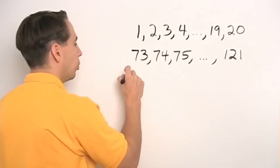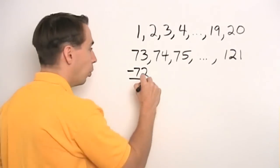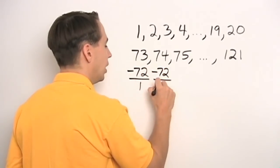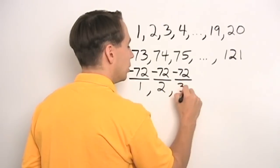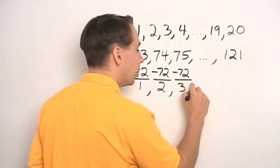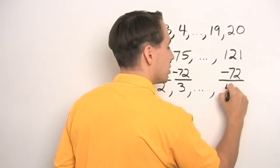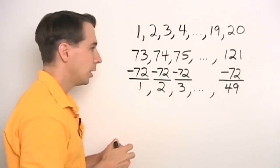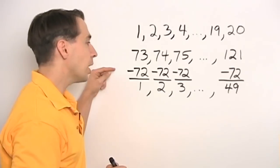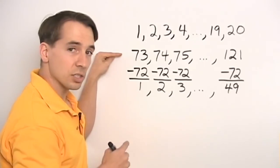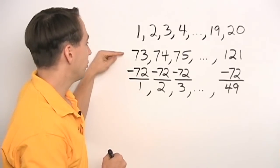So let's make this list start with one. We'll subtract seventy-two from seventy-three and that gives us one. And when we do that to each of the other numbers in the list, we get two, and then we get three. Sure enough, we get one, two, three, four — all the way up to: we subtract seventy-two from the last number in the list and we have forty-nine. Clearly there are forty-nine numbers from one to forty-nine. Subtracting seventy-two from every number doesn't change how many numbers are in the list, so there are forty-nine numbers in the original list.